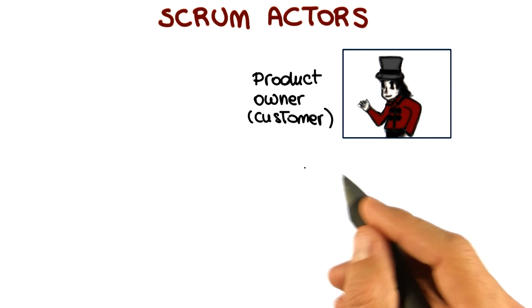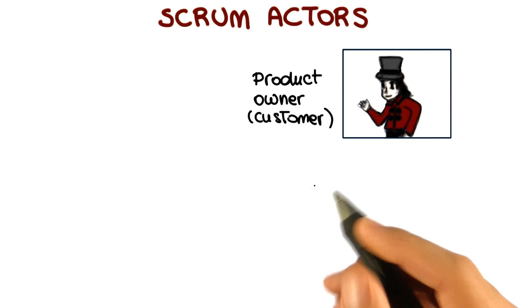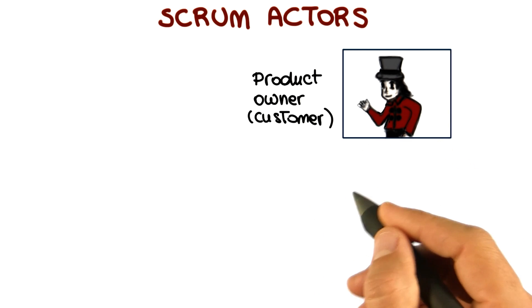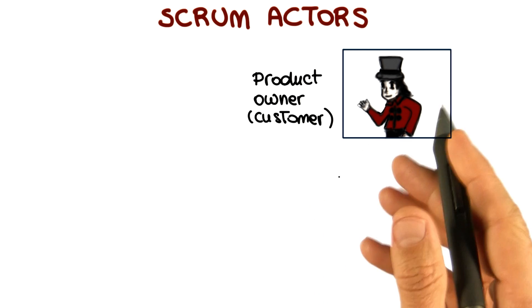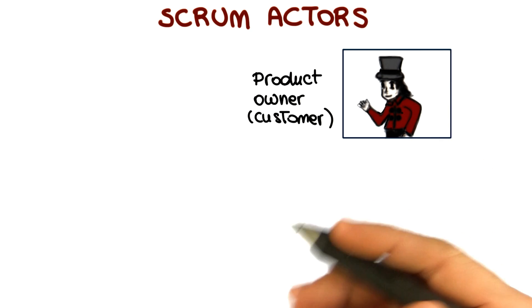What the product owner does is to clearly express these backlog items, and also to order them by value, so that they can be prioritized.